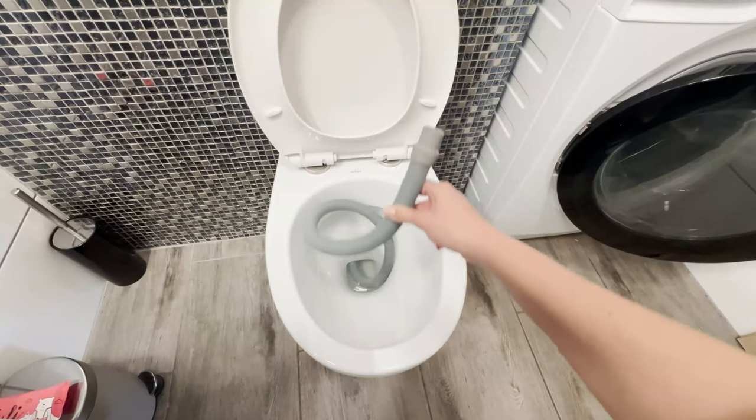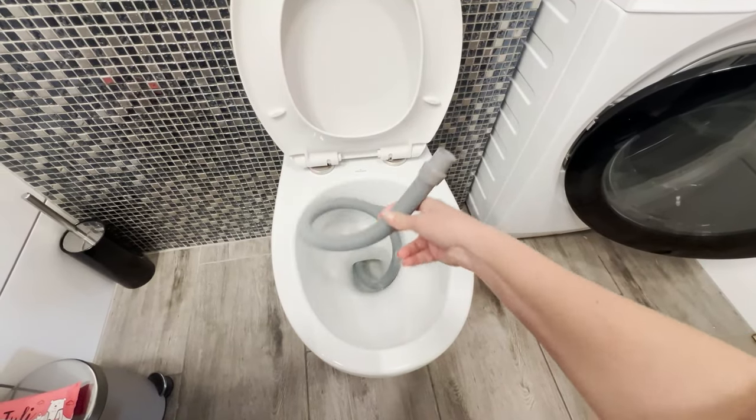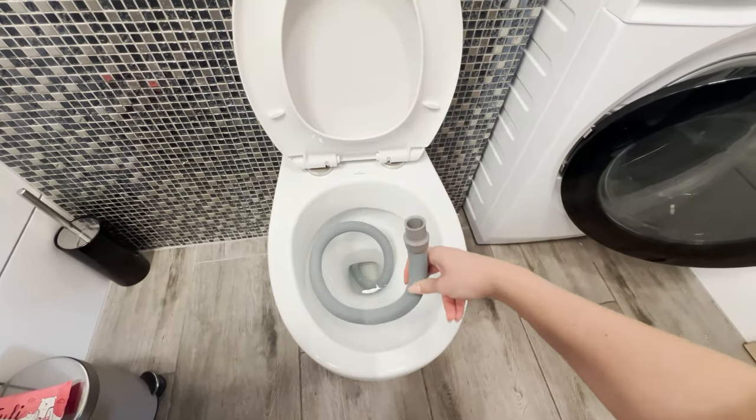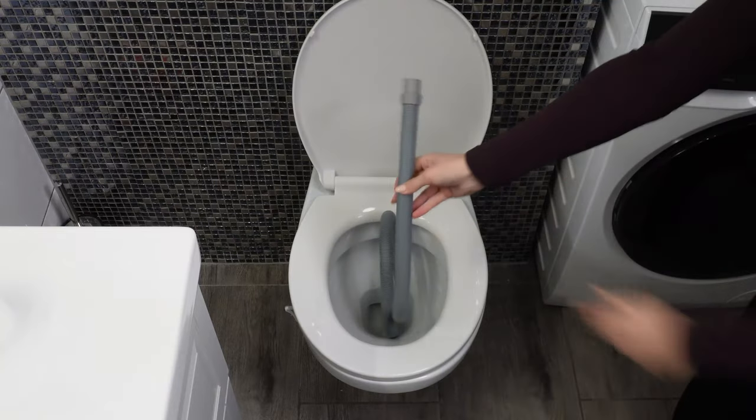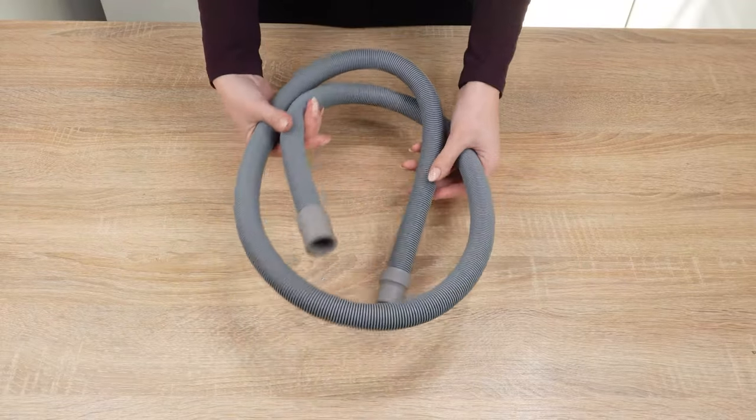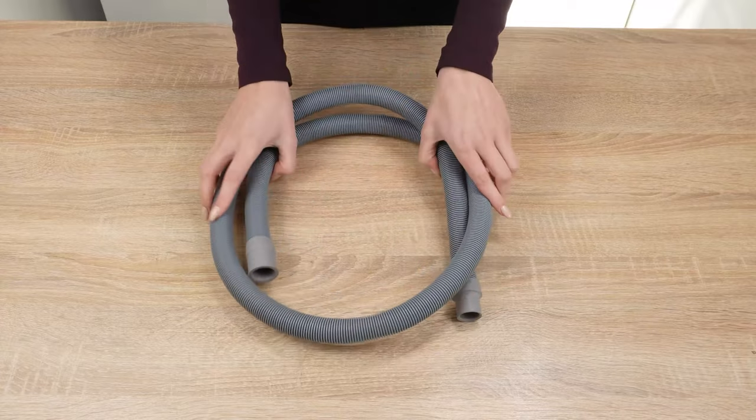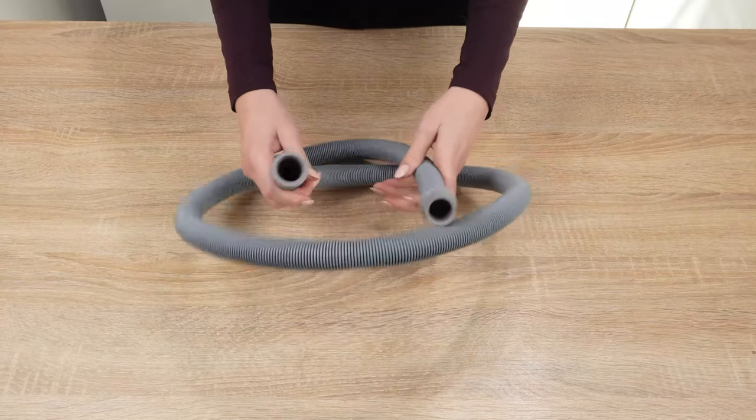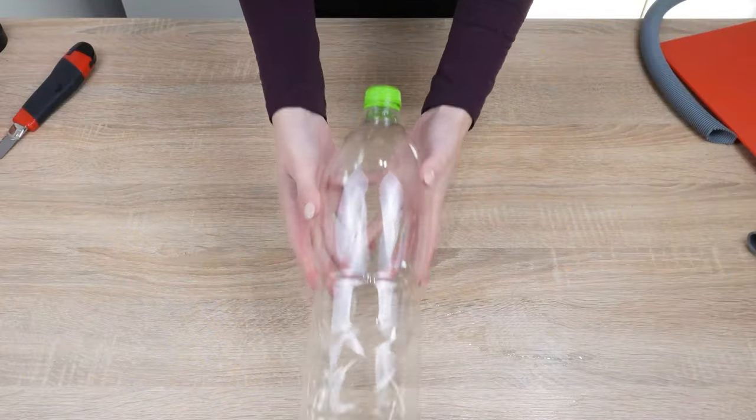Plumbers keep this from you. I inserted a hose into the toilet and got rid of the problem. If your toilet keeps clogging and emits an unpleasant odor, you don't have to call a plumber. All you need is a regular hose from a dishwasher or washing machine and an empty bottle.